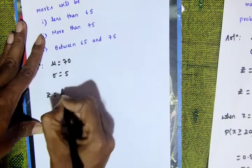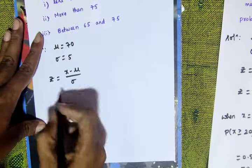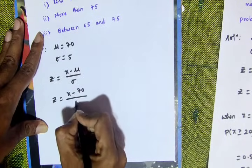The formula is Z equals X minus mu over sigma. So Z equals X minus 70 over 5.